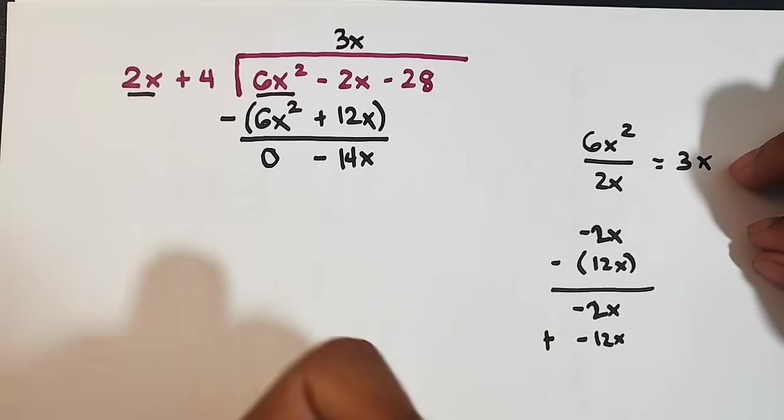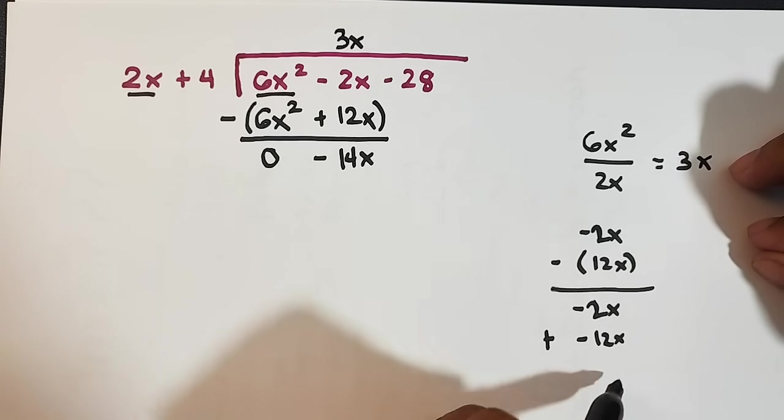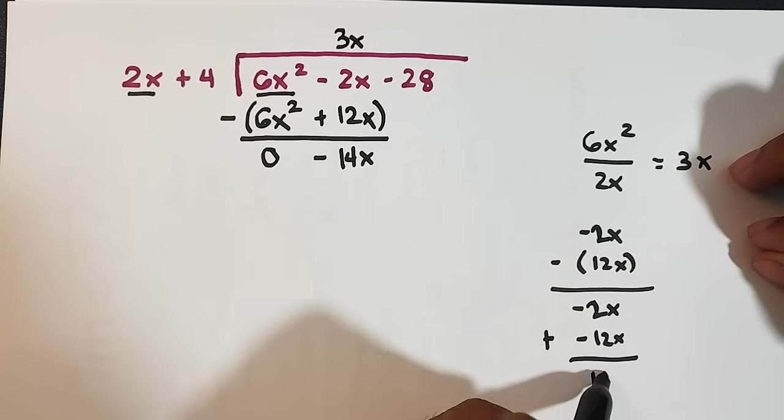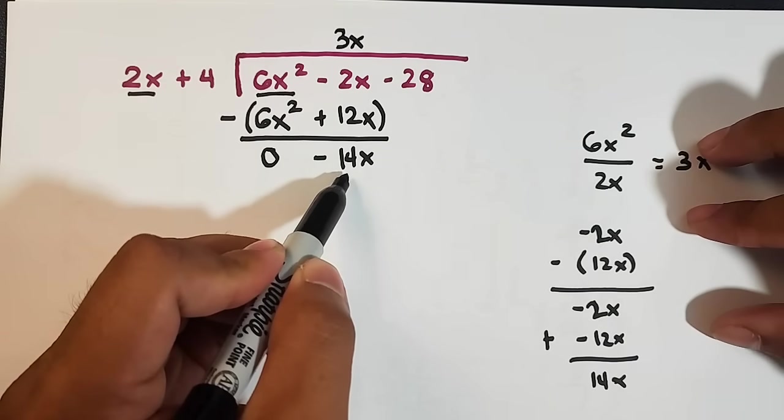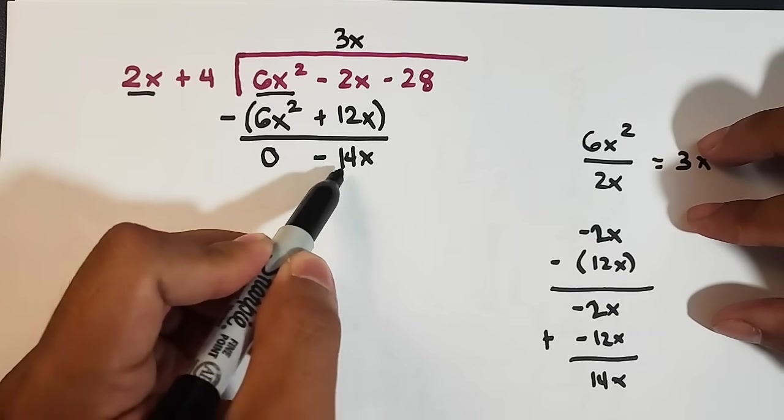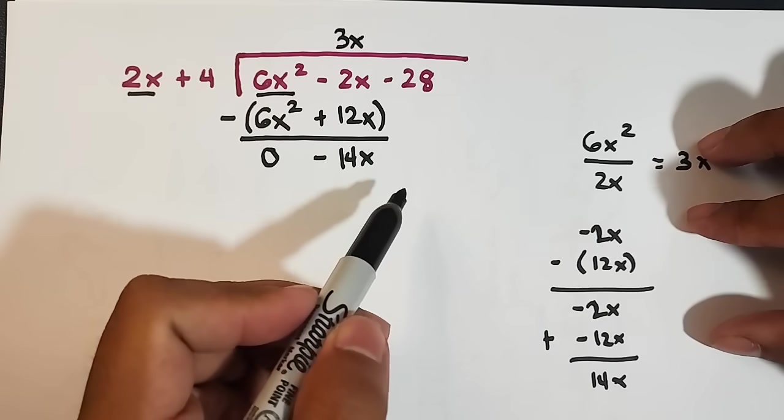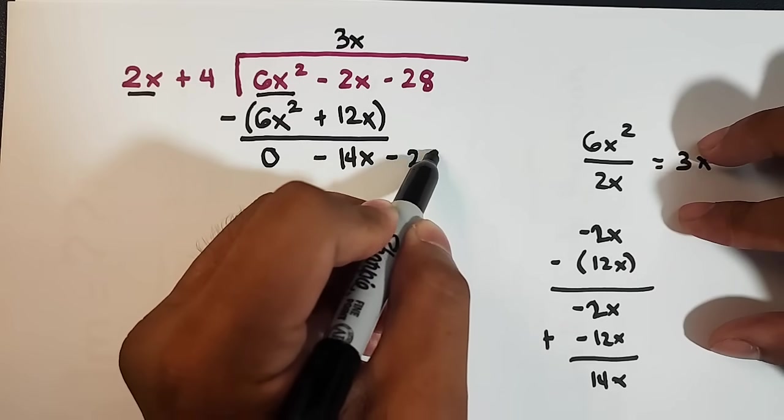Same sign, they will become same sign. So we add. The result will be 14x. So let's continue here. So you have negative 14x. Then after that, you will bring down negative 28. So negative 28.